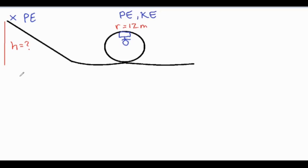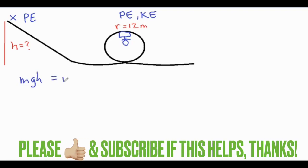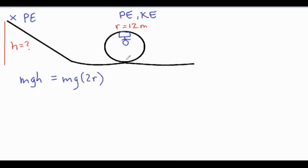So we know that the MGH is going to equal what we call MG(2R) because the height is double the radius which is the diameter, plus one half MV squared. Assuming that it's frictionless and air resistance isn't significant, because of the conservation of energy, all the energy that we have in the beginning loaded up from the hill, we will have that energy as the sum of the potential energy at the top of the loop plus the kinetic energy.